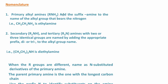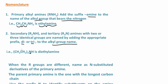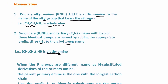Let's get into the nomenclature. For primary alkyl amines, all we do is add the suffix -amine to the name of the alkyl group that bears the nitrogen. So in this case, we have an ethyl group and we would call this ethylamine — those are easy to name. For secondary and tertiary amines with two or three identical groups, we name them by adding the appropriate prefix di- or tri- to the alkyl group name. For example, with two ethyl groups, this would be diethylamine.